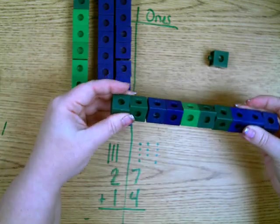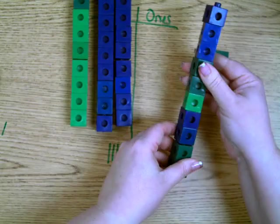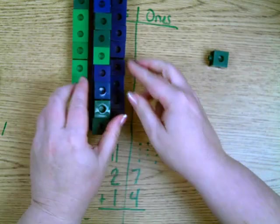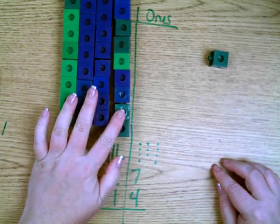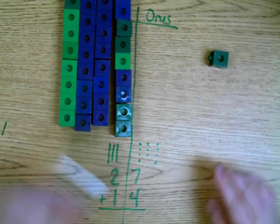The understanding that we made a group of ten, put all of our ones together, and now it belongs over here with the tens. That was the concrete example. Now in the representation, well what did we do?